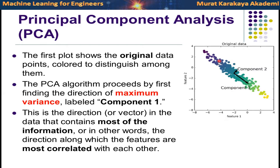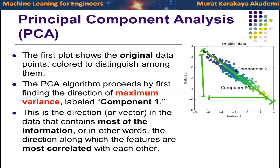If you look at the data, the variation in the data is changing in a particular direction. The data is changing a lot in that direction — you can see that the yellow and blue points are changing a lot along that direction. But if you look at the perpendicular direction, the change is limited. In the y-axis the change is also limited. So the variation is bigger in one direction than the other.